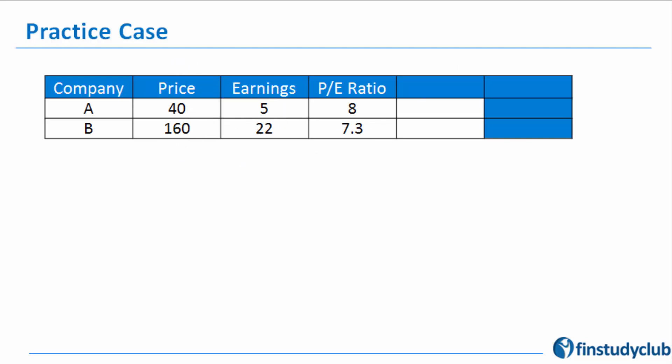If on $5 of earnings your price is $40, that means for $1 of earning the price is $8. We did the same analysis and found that for $1 of earning, the price prevailing in case of B is $7.3.